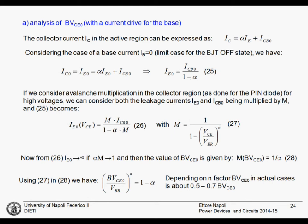First analysis. We want to calculate and analyze the case when we have BVCE0. We have a current drive for the base. We are in the active region. The base to collector junction is reverse biased. There is a small current entering into the base. And we can say that the collector current is equal to alpha multiplied IE. Alpha is the current gain between current and emitter. Alpha is much smaller than 1.